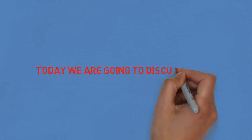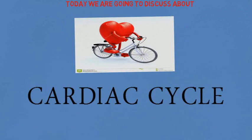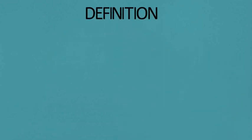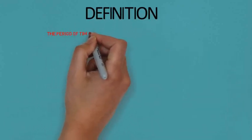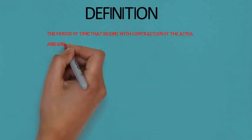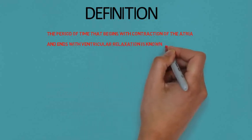Today we are going to discuss the cardiac cycle and its definition. The period of time that begins with the contraction of the atria and ends with the ventricular relaxation is known as cardiac cycle.